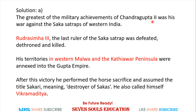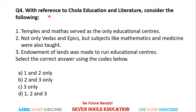The last Saka ruler, Rudrasimha III, was dethroned and killed by Chandragupta II. His territory in western Malwa and the Kathiawar Peninsula was incorporated into the Gupta Empire. After this victory, Chandragupta II received the title 'Sakari' — meaning destroyer of Sakas — and he was also known by the name Vikramaditya.